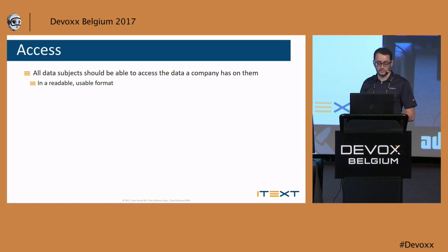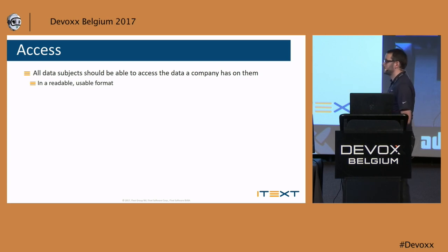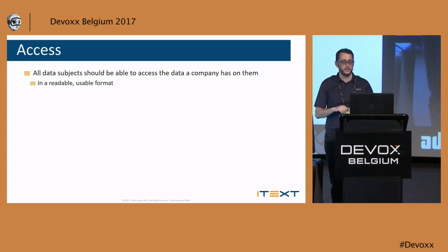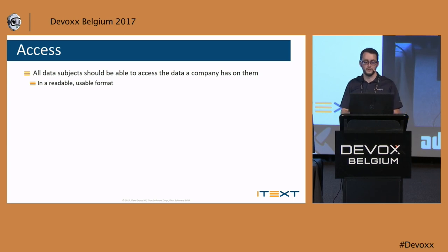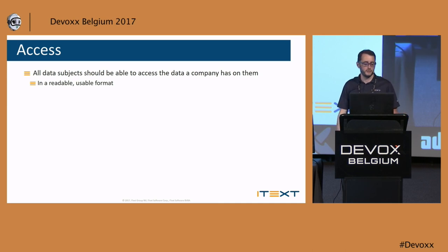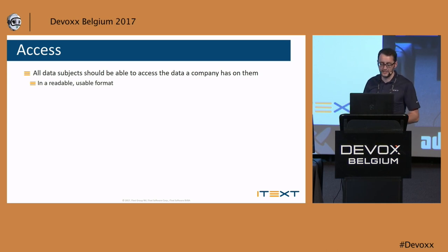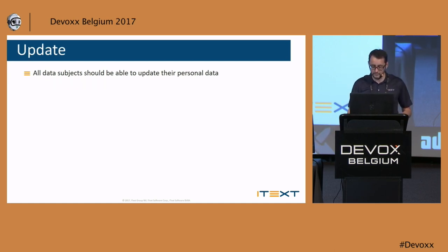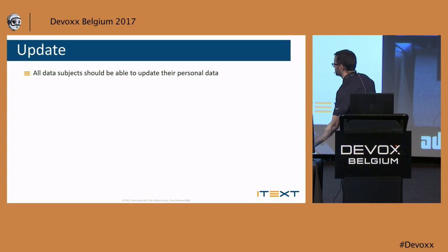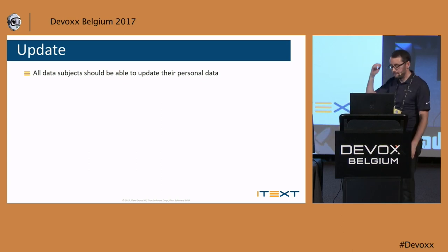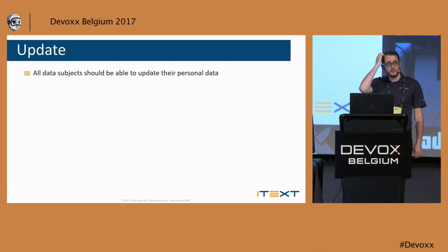Going back to the Facebook example — you can go to facebook.com, log in, and ask Facebook to provide everything they have on you. They will do that. You can even ask them to print it out — there was a trolling campaign a few years ago where people did just that. Updating is another obvious right — all data subjects should be able to update their personal data. Companies actually want this too, since they want your most up-to-date information.